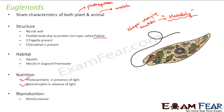Reproduction in Euglenoids is mostly asexual. Regarding heterotrophic nutrition, it can be parasitic. One example would be those which feed on other small organisms found in freshwater bodies.